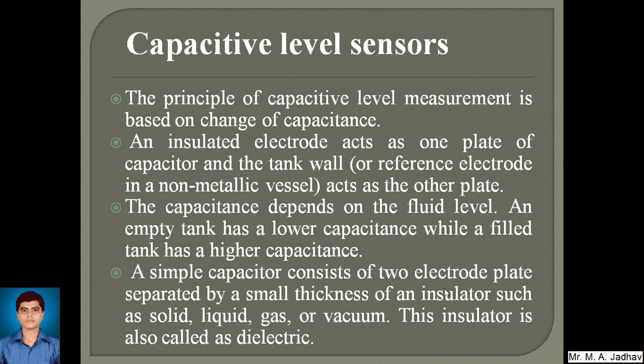A simple capacitor consists of two electrode plates separated by a small thickness of an insulator such as solid, liquid, gas, or vacuum. This insulator between the two electrodes is called the dielectric. Capacitive level sensors are used for measuring the level in a tank of different liquids, or even for solid level in a tank. In chemical factories, various tanks are filled with various chemicals and we need to know the level of each fluid so that it will not hamper the production.